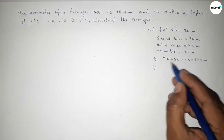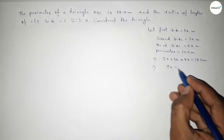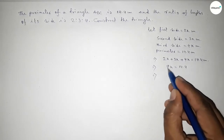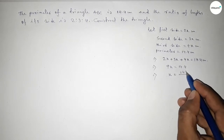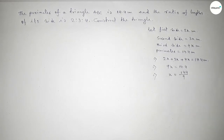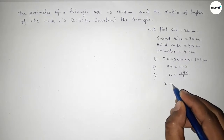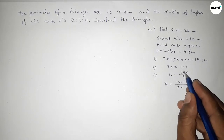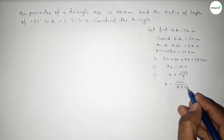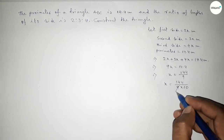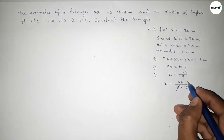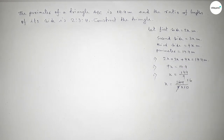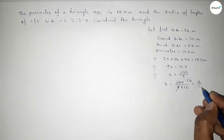This implies 9x = 14.4, which gives x = 14.4 ÷ 9. Removing the decimal, we get 144 ÷ 9 = 16, so x = 16/10 = 1.6.